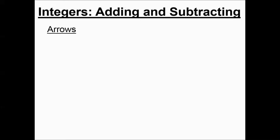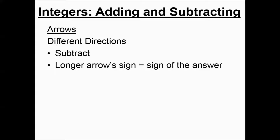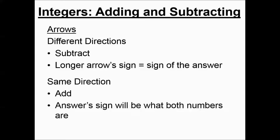For arrows, if the arrows are pointing in different directions, you're going to subtract the two numbers, and the longer arrow's sign will be the sign of the answer. You might want to write these rules down or screenshot it and just have it available as you're working these out. When the arrows are the same direction, you're going to add the two values, and the answer sign is the sign of what both of those numbers are.